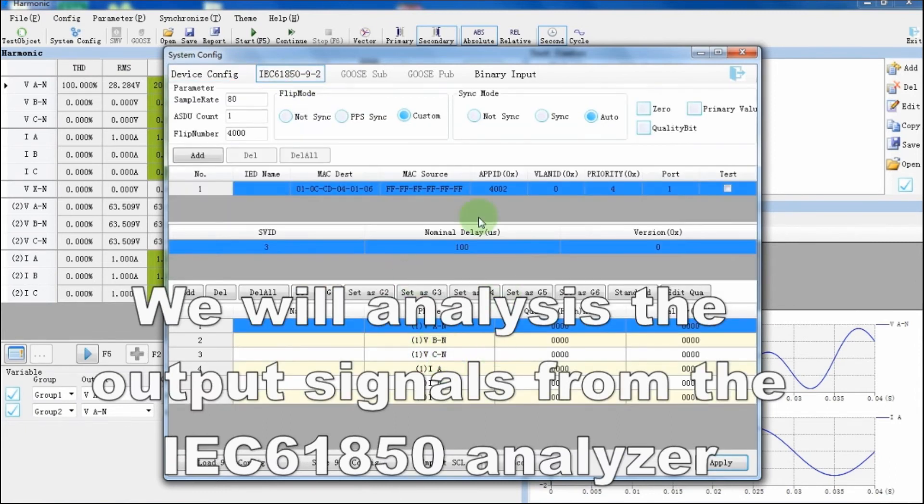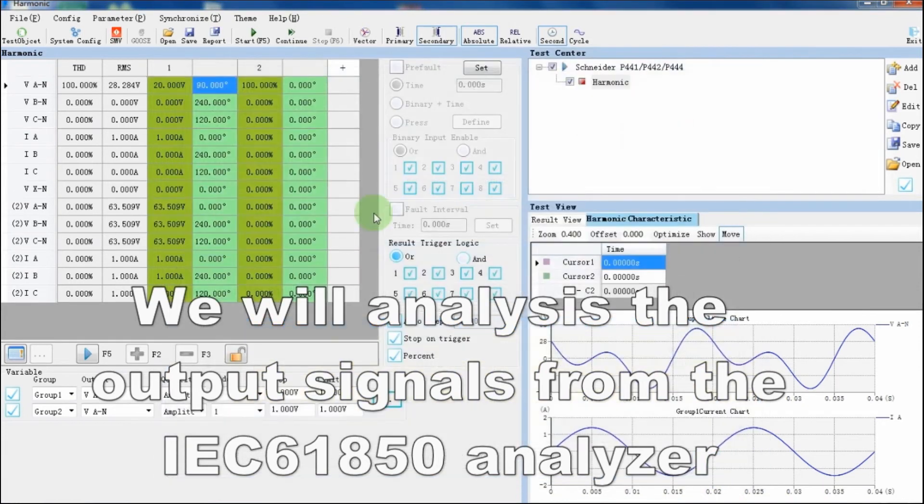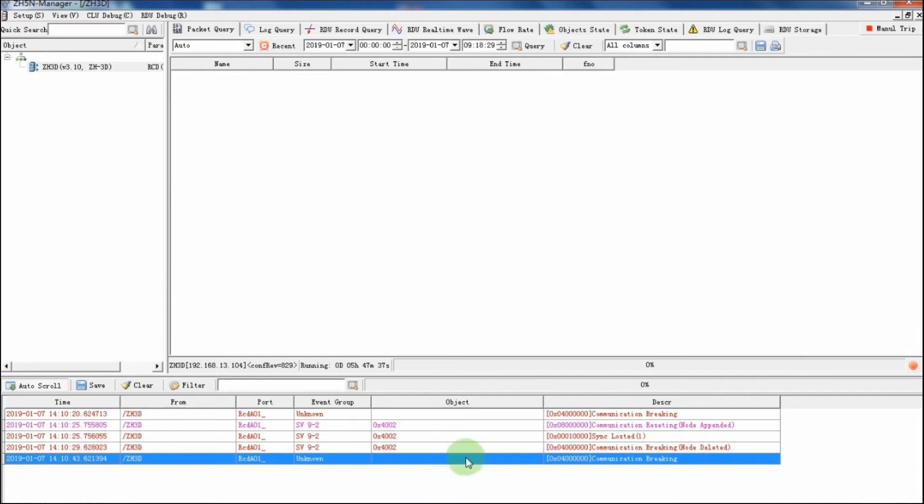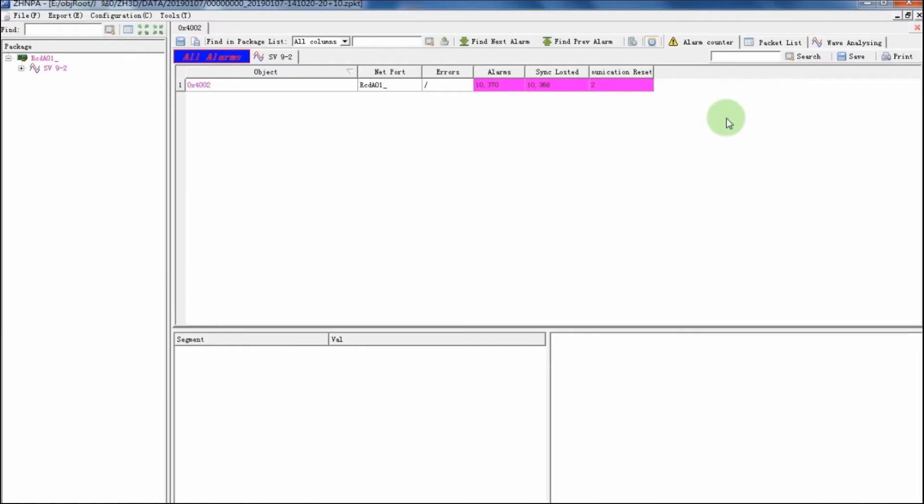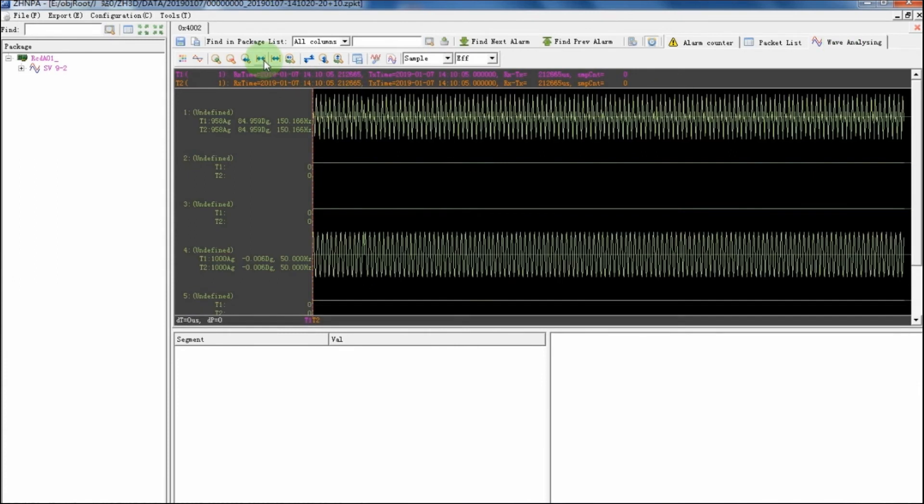Later, we will do few settings in the sampling value analyzer. Once we will receive the waveform in the sampling value analyzer, we will see that the waveform is similar to the analog curve waveform and similar to the KRT software simulation waveform.